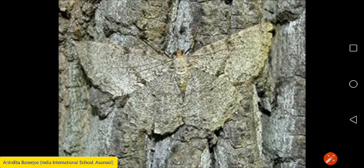Now we come to camouflage. Camouflaging means hide or disguise of a person, animal or object. See this picture of a butterfly — can you identify it? No, it is difficult to identify because it mingles with the surrounding, so the predator or enemy is not able to identify it.